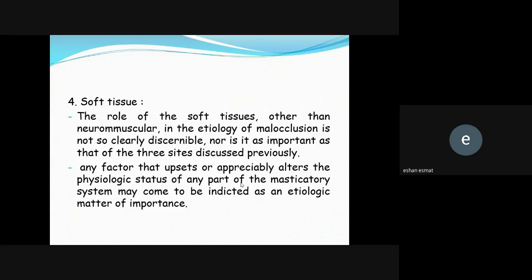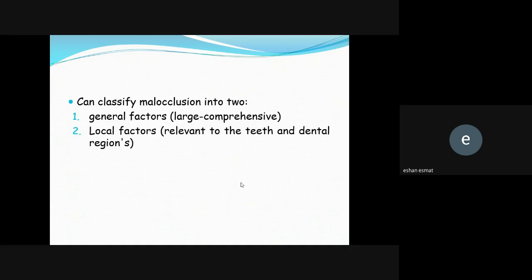Soft tissue — the role of soft tissue, other than neuromuscular, in the etiology of malocclusion is not as clearly described nor as important as the three sites discussed previously. However, any factor that upsets or alters the physiological status of any part of the masticatory system may be indicated as an etiological factor of importance. Soft tissue is also important.